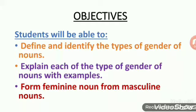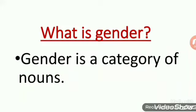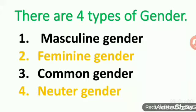So children, let us first see what is gender. Gender is a category of nouns. There are four types of gender in English language. First, masculine gender. Second, feminine gender. Third, common gender. And fourth, neuter gender. So children, let us learn all of them one by one.